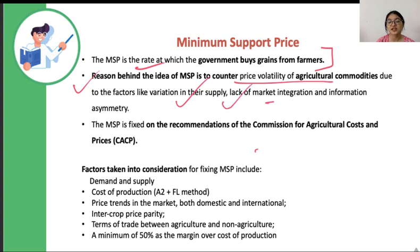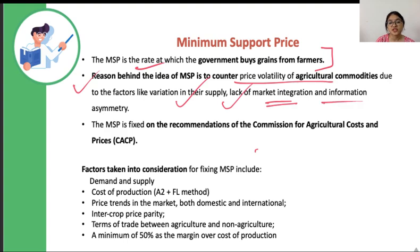In that condition the government would come to help farmers get a fair price for their produce. Other reasons for price volatility include the lack of market integration — although produce is good, farmers are not able to integrate themselves with the formal market (mandis) to sell their produce. There is also information asymmetry: farmers lack information about international prices or news that can impact agricultural commodity prices, causing further price volatility. The government comes to the rescue in such conditions.